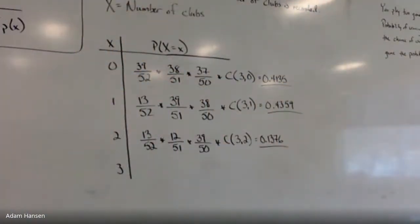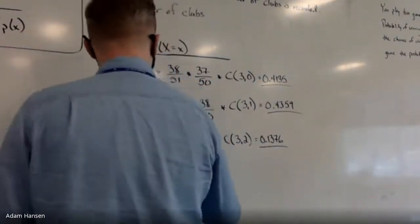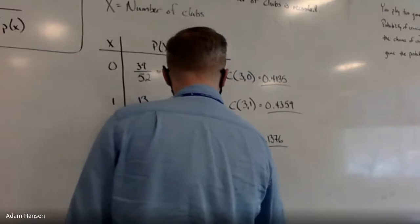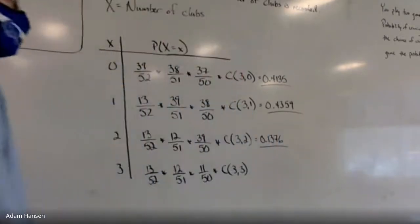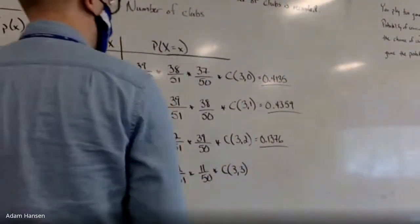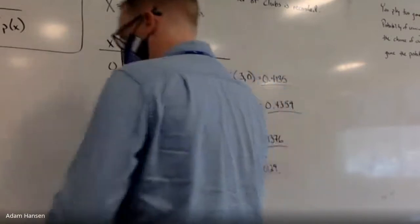The last outcome is all three cards being clubs: 13/52 × 12/51 × 11/50 × C(3,3) — three-choose-three because there's only one way to have all three cards be clubs. That gives 0.0129. Now I have my distribution table complete.